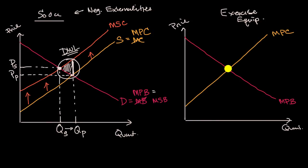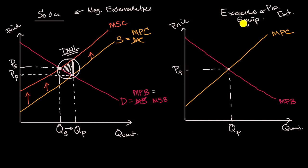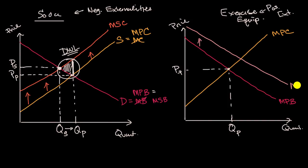But let's say there is a positive externality here. The more exercise equipment that's out there, the more people are going to exercise. It's going to make them happier and lower healthcare costs. So we would want to add that positive externality to the marginal private benefit curve to get the marginal social benefit curve. So we add to this and get the marginal social benefit curve.